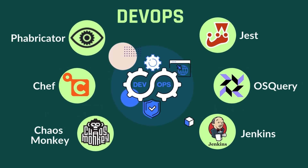In the realm of DevOps, Facebook uses Fabricator for code review and project management, Jenkins for continuous integration, and Chef for configuration management. All of these tools streamline the development process, allowing Facebook to deploy new features quickly and reliably. For testing, Facebook relies on Jest for JavaScript testing and OSQuery for system monitoring, helping maintain quality and reliability. And there's also Chaos Monkey — Facebook's tool for resilience testing — which intentionally disrupts services to test system recovery, ensuring Facebook remains reliable even in the face of failure. It's like a fire drill for their systems, always prepared for the unexpected.